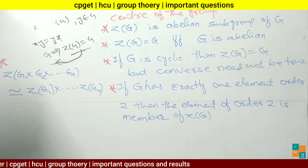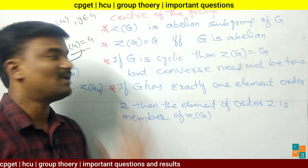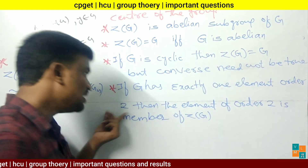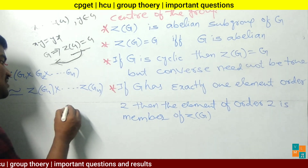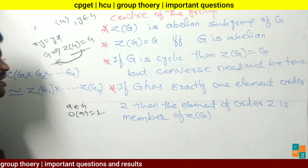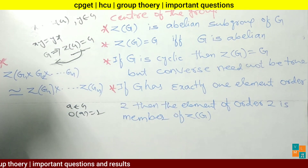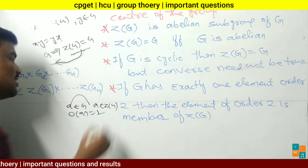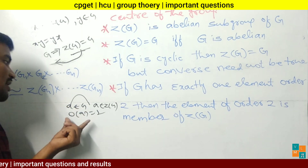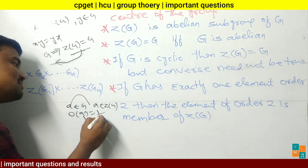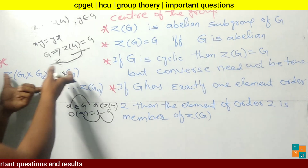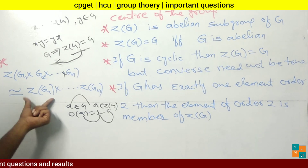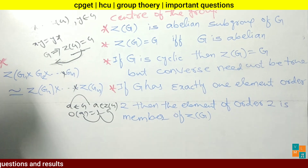Fourth point: if G has exactly one element of order 2, then that element of order 2 is a member of Z(G). So if A is an element of G with order 2, then A is always a member of the center of the group.